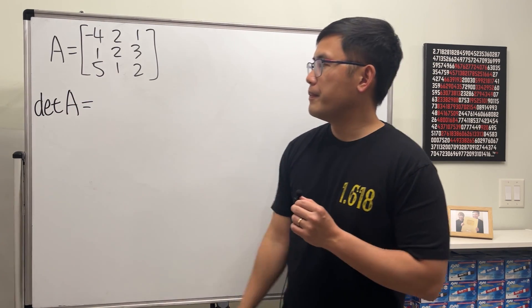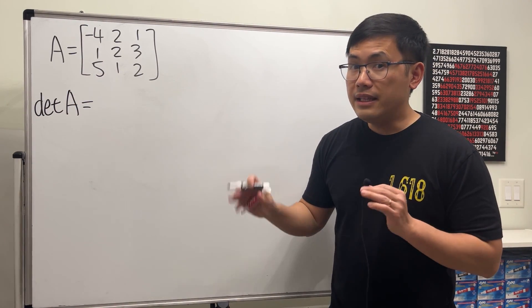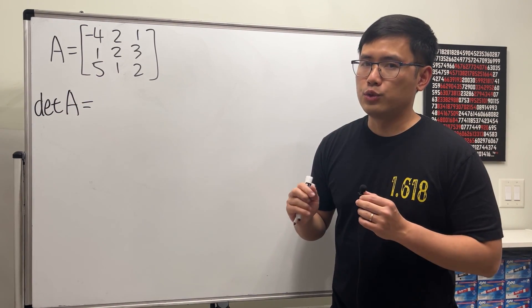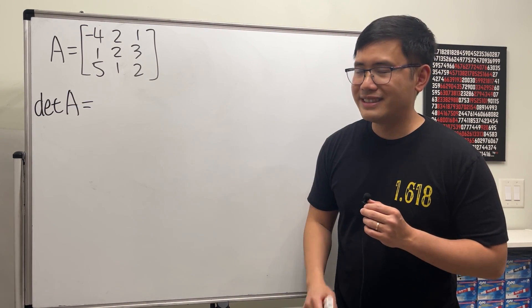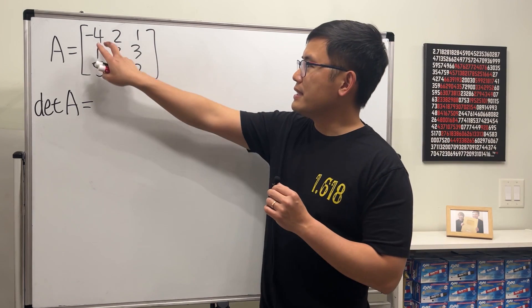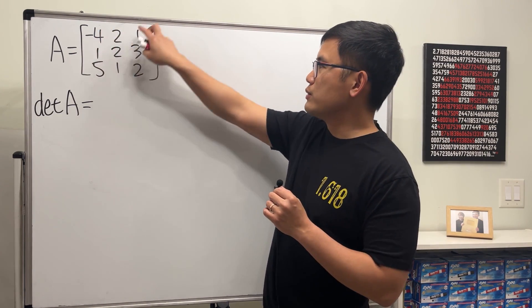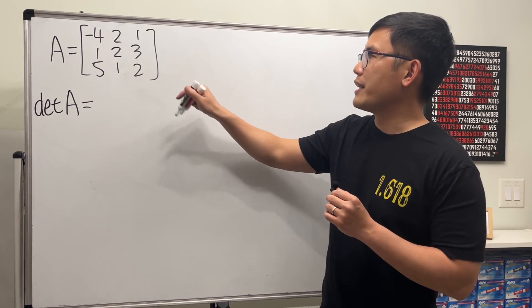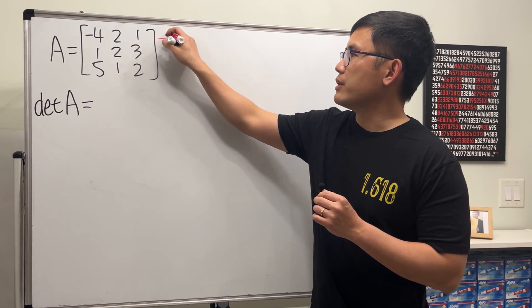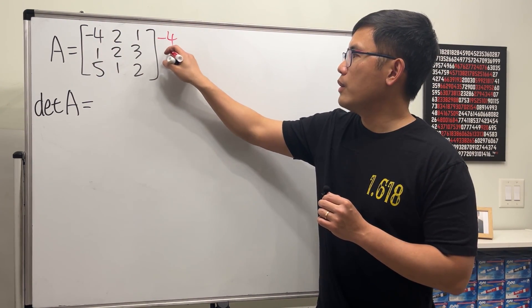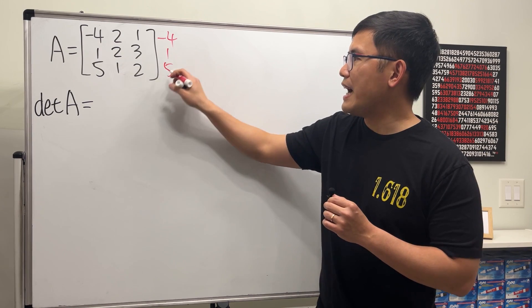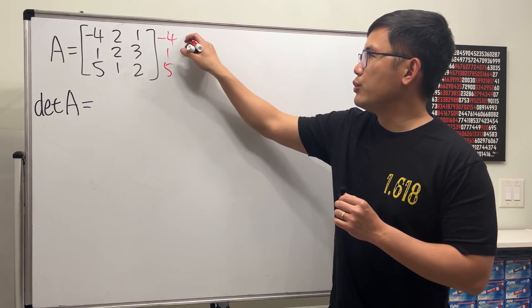This only works for a 3x3 matrix. First, let's write down the first two columns again right here: negative 4, 1, and 5, and then 2, 2, 1.